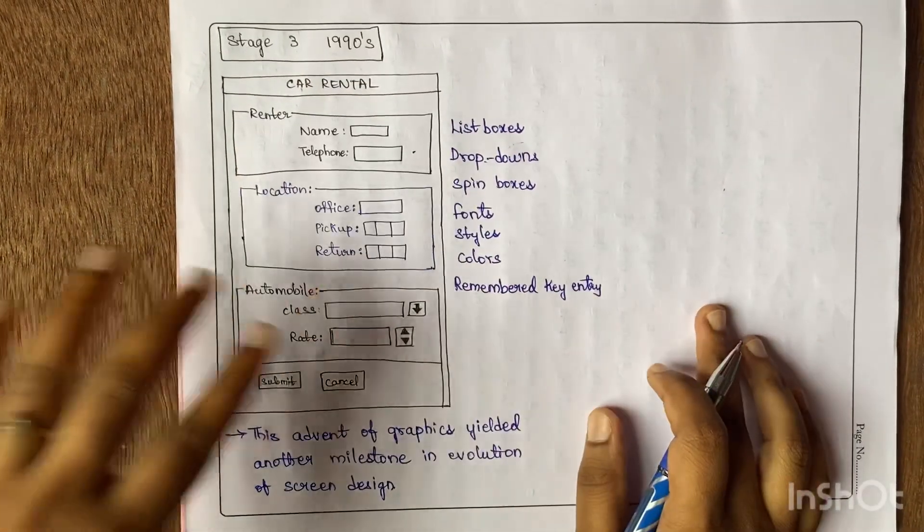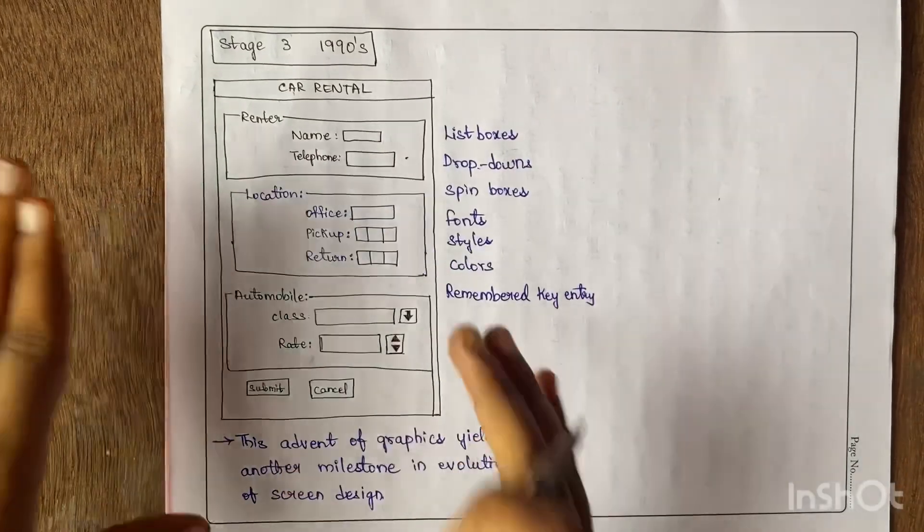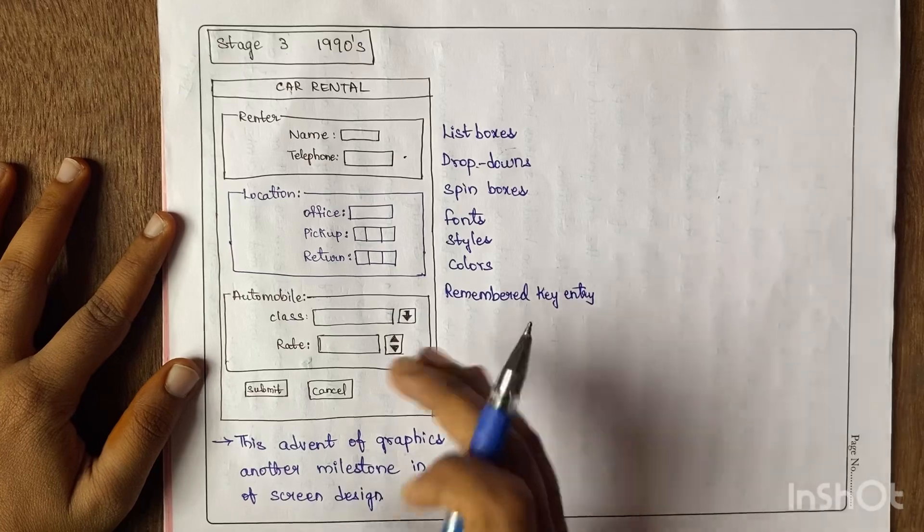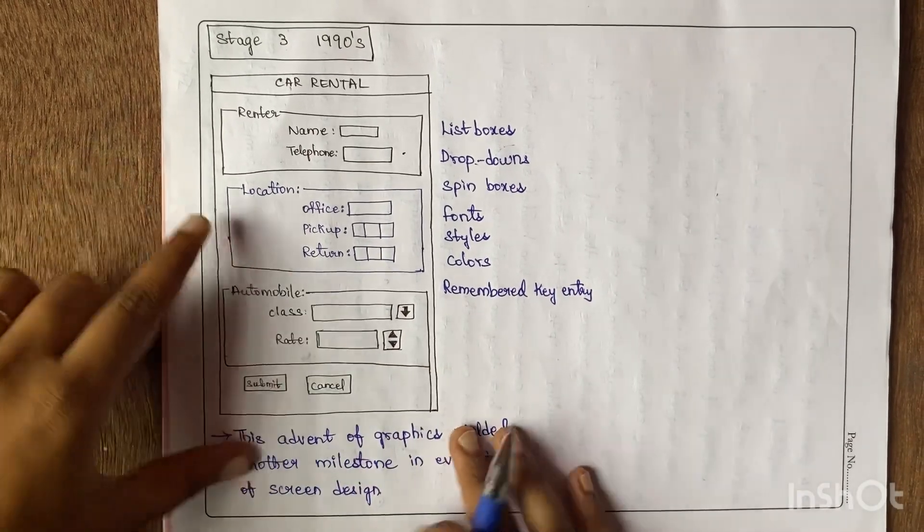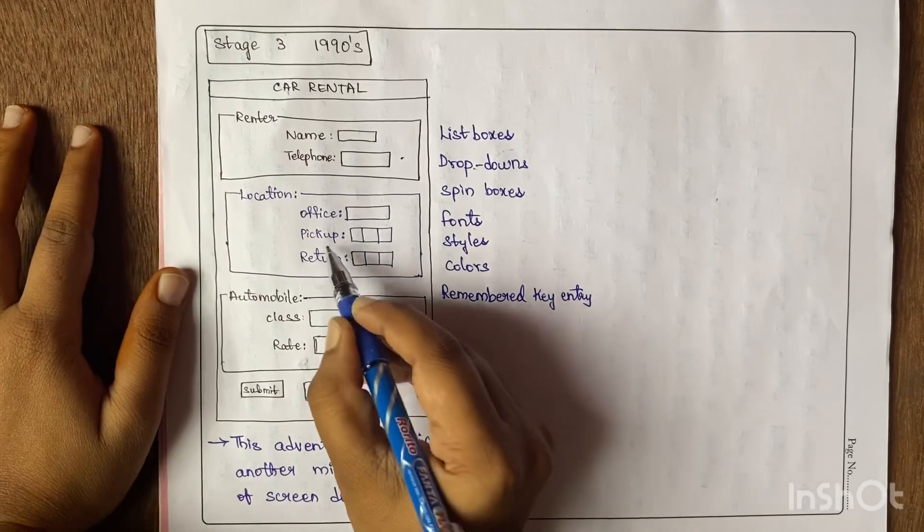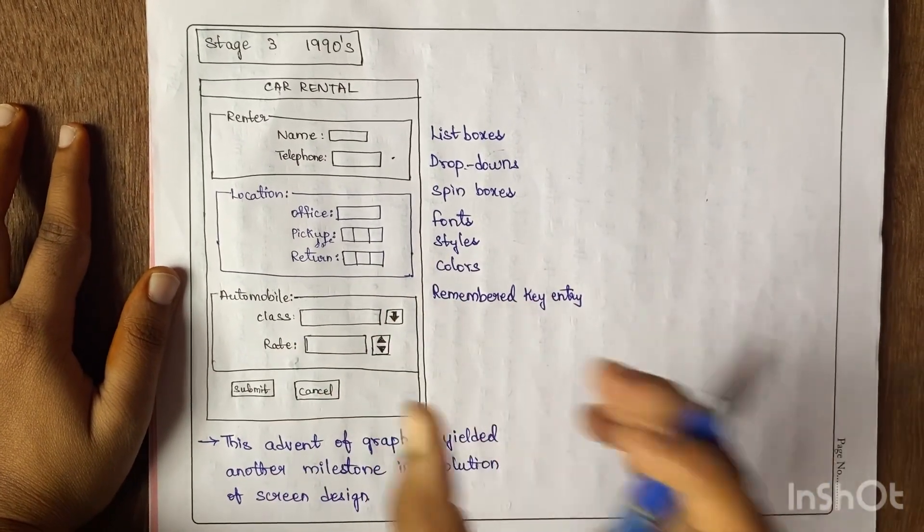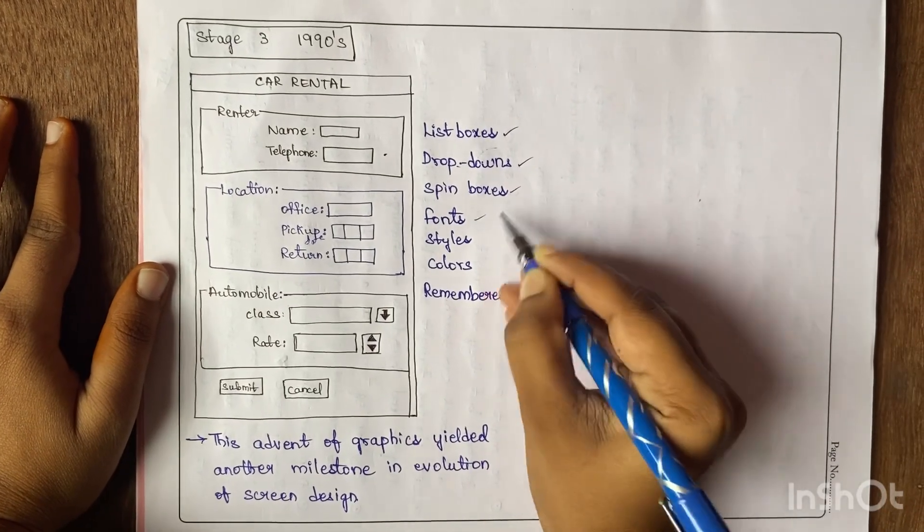stage, Stage 3 during 1990s, we can see this is very clear compared to previous designs. They have proper borders, alignment, and structure, and messages became very clear. For example, they have options for picking dates—they've given separate boxes for everything. That means they implemented list boxes, drop-downs, pin boxes, fonts, different